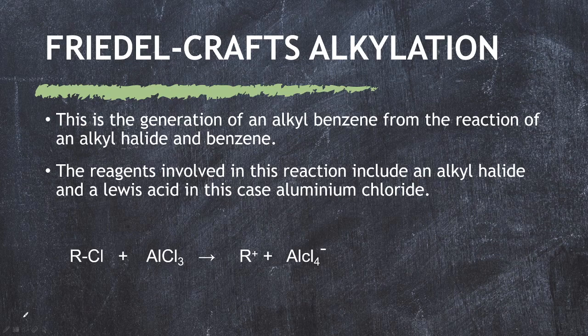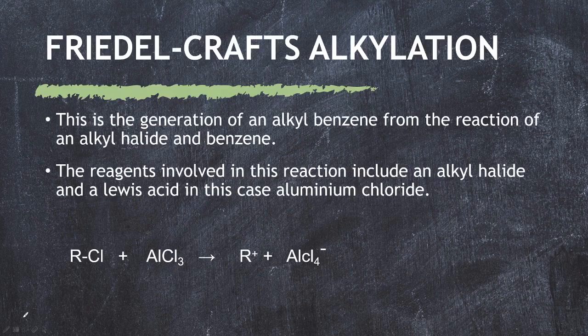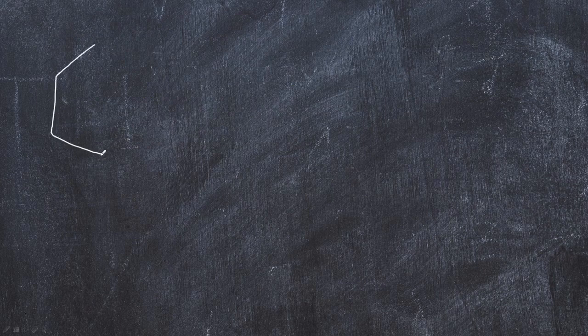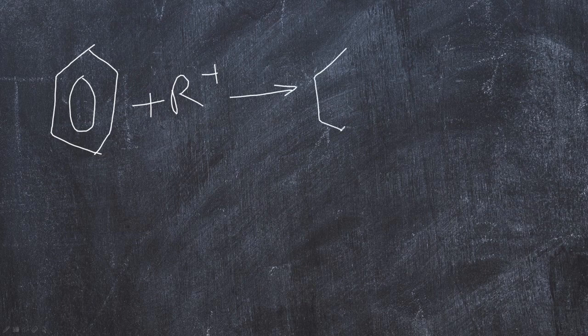This leads to the formation of the carbocation and also the formation of the aluminium chloride ion. Now I'm going to talk about how this reaction occurs — the mechanism. It's not a hard mechanism, it's quite straightforward. Once the electrophile, the carbocation, is formed, we can combine it with our benzene immediately, which leads to the formation of an intermediate with the R group attached.